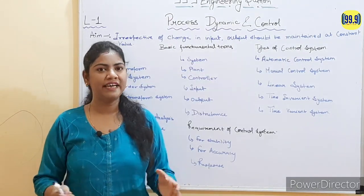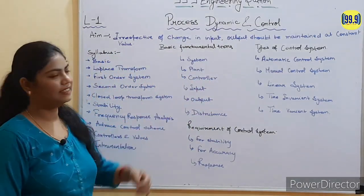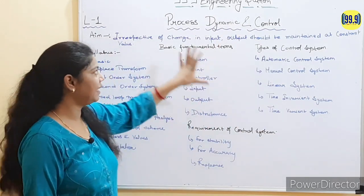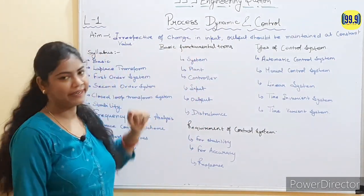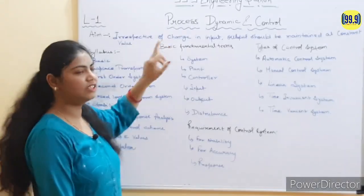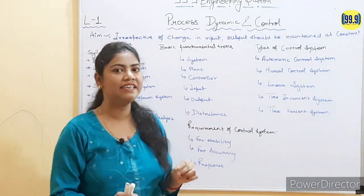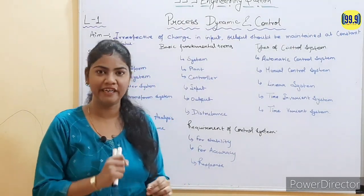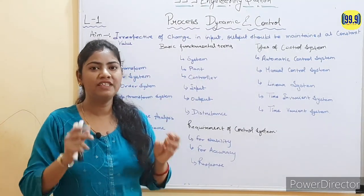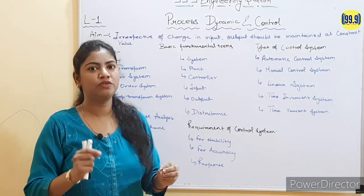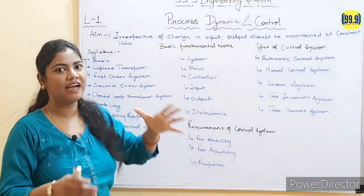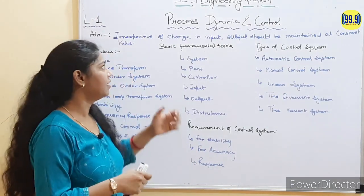So now without wasting time, let's get started with the lecture. If we consider the name of the subject — Process, Dynamic and Control — and break it into three words for better understanding: process means, in general language, a series of actions taking place. But in chemical engineering language, it is the small portion of the system which is to be considered or regulated or controlled by the controller. This process is basically a plant or chemical equipment.